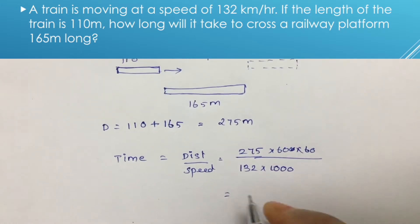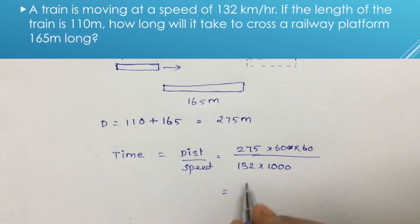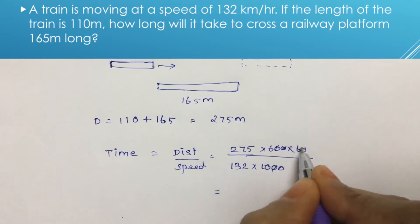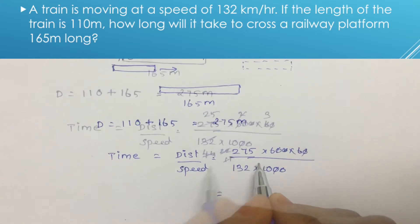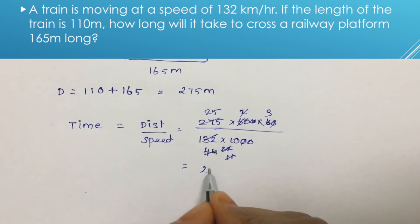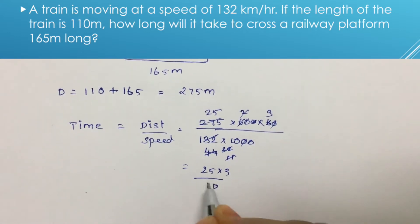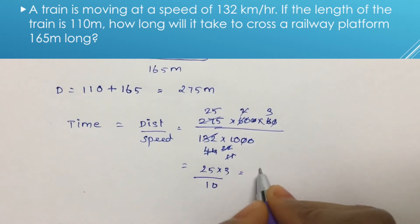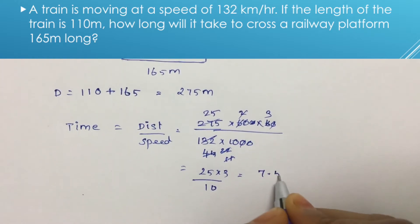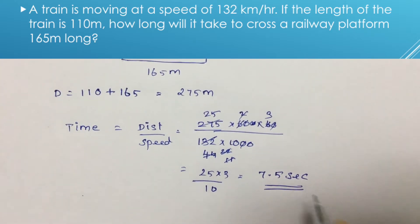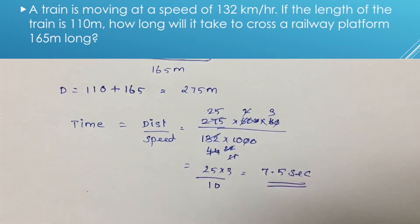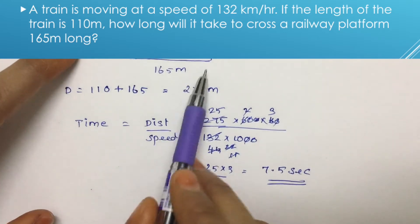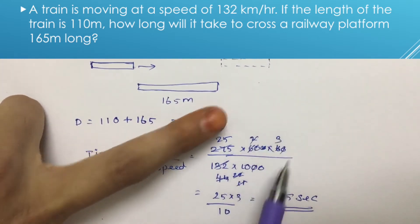Solving this, we get 7.5 seconds. So the train crosses the entire platform in 7.5 seconds.